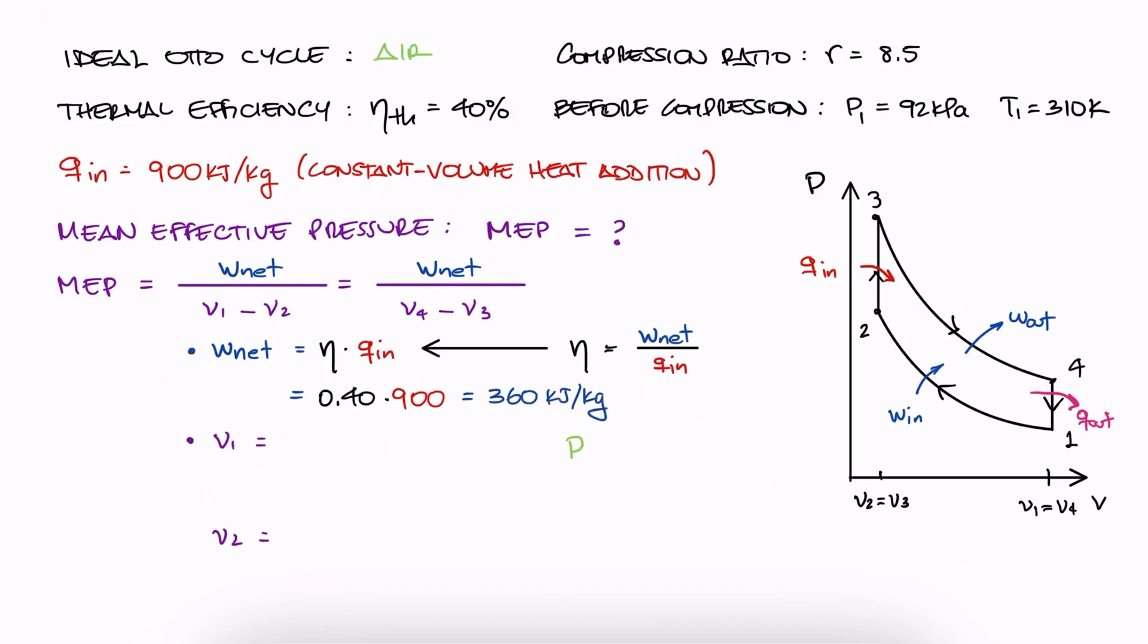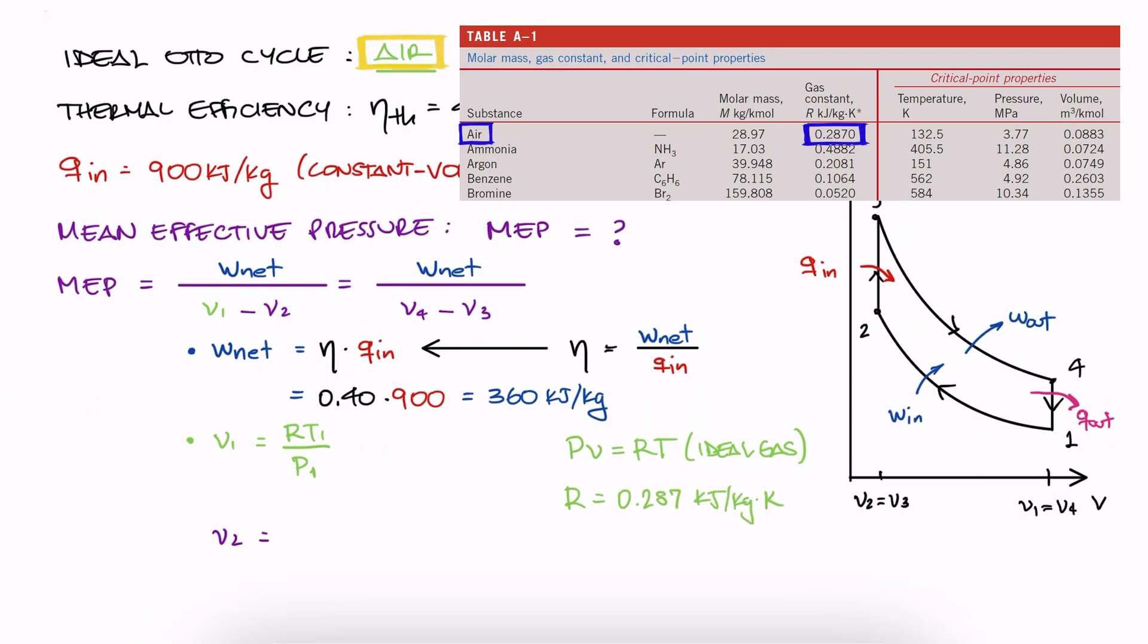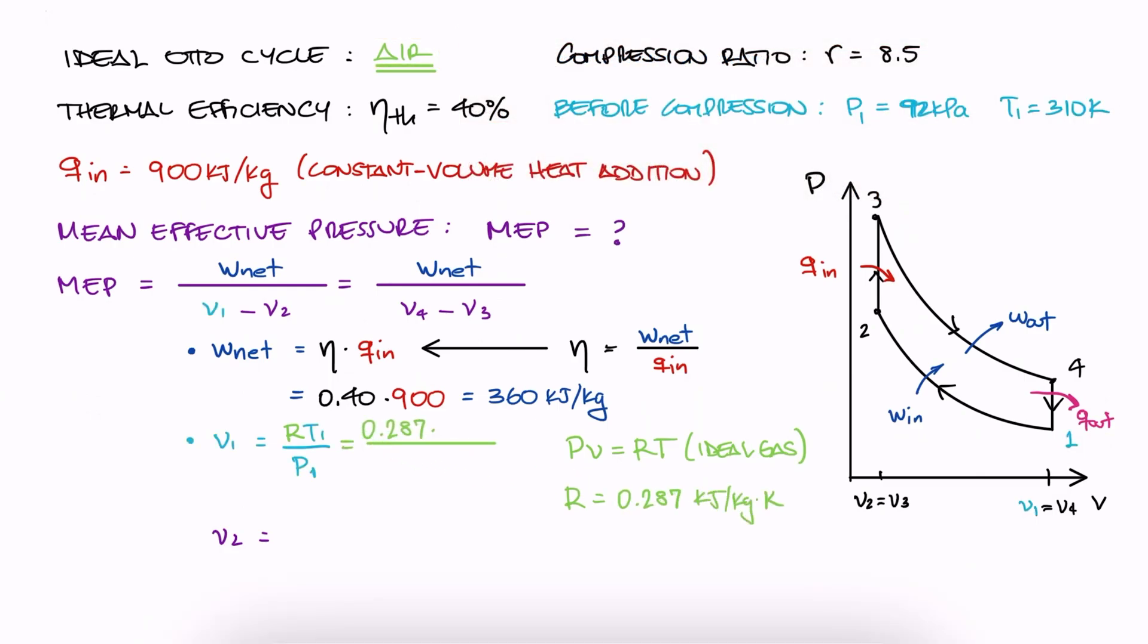For specific volume at 1, and since air can be assumed to be an ideal gas, we can use the ideal gas equation. We look up the gas constant for air and substitute the given values for T1 and P1 to find V1.